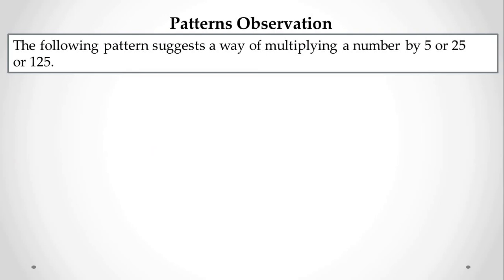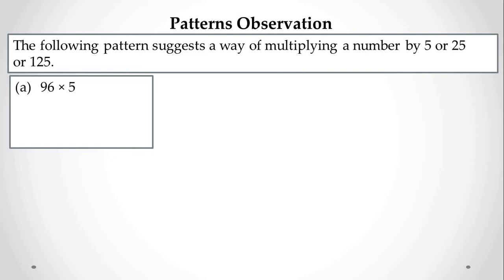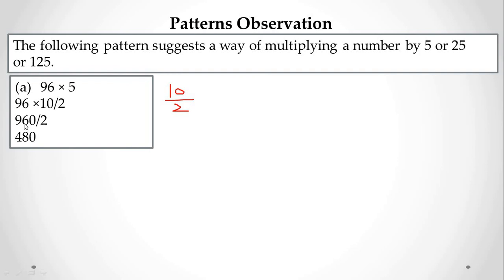The following pattern suggests a way of multiplying a number by 5, 25, or 125. For 96 × 5: write 5 as 10÷2. So calculate 96 × 10 = 960, then divide by 2 to get 480. This works because multiplying by 10 and dividing by 2 is the same as multiplying by 5.